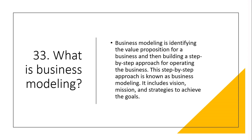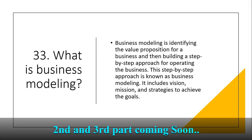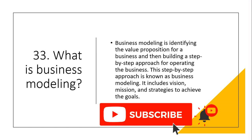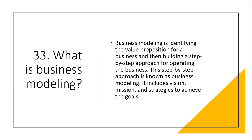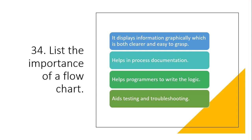Question 33: What is business modeling? Business modeling is identifying the value proposition for a business and then building a step-by-step approach for operating the business. It includes vision, mission, and strategies to achieve the goals. Question 34: List the importance of a flowchart. It displays information graphically, which is both clearer and easy to grasp; helps in process documentation; helps programmers to write logic; and aids testing and troubleshooting.